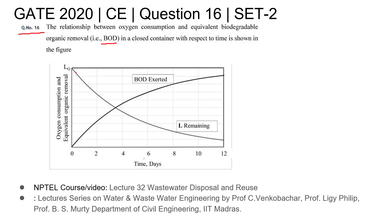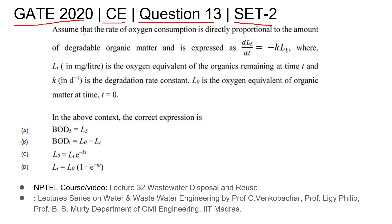They have given one graph. The upper graph is BOD exerted and the lower graph is BOD remaining. L0 is the BOD at time zero.